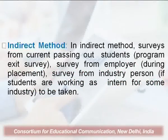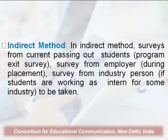In the indirect method, we use the survey from current passing-out students — that is the program exit survey — the survey from the employer during placement, and the survey from industry people if students are working as interns. All these surveys need to be quantified, with questions like: rate our students on a scale of 5, where 5 is excellent and 1 is not satisfactory.